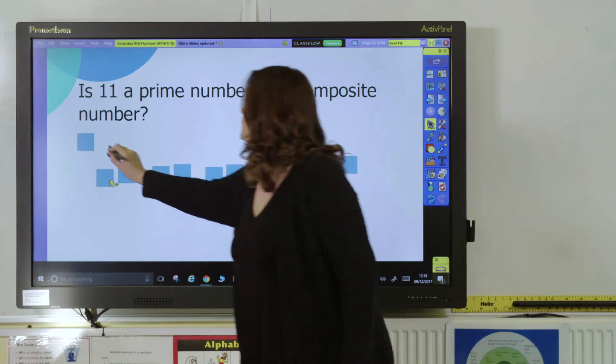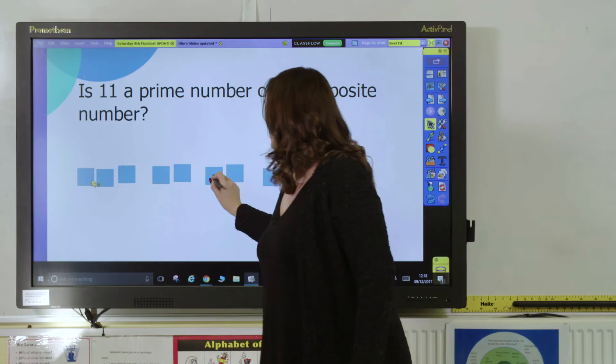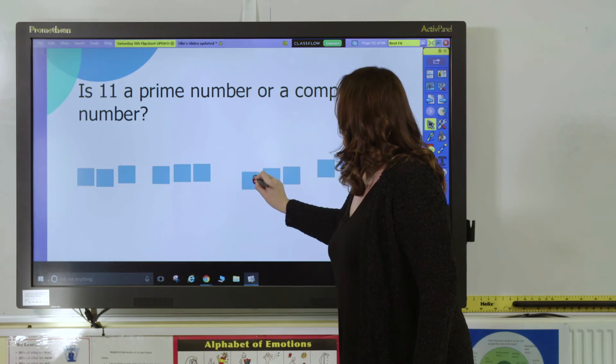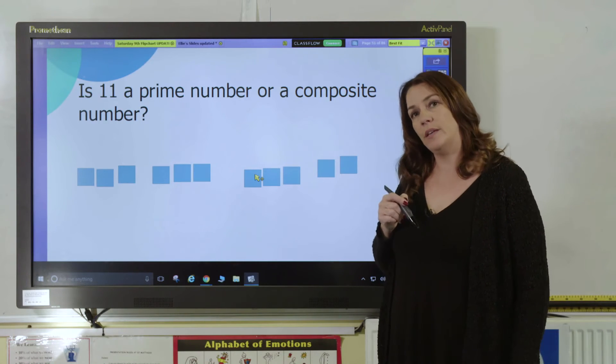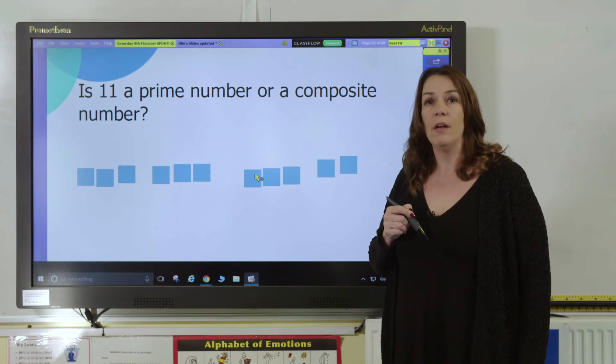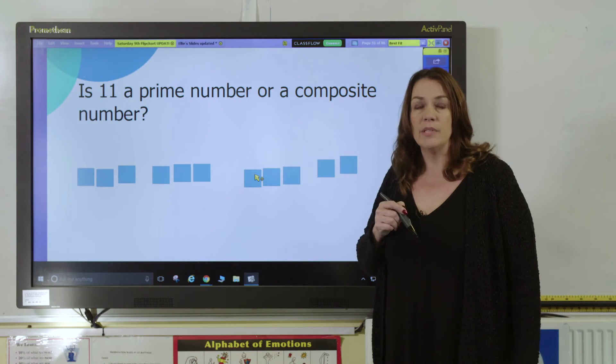We can't split them into equal groups of 2 because we have a remainder. What about 3s? We can't split them into 3s because they have a remainder. So from doing this we can see that the only factors of 11 are 1 and 11, so it is a prime number.